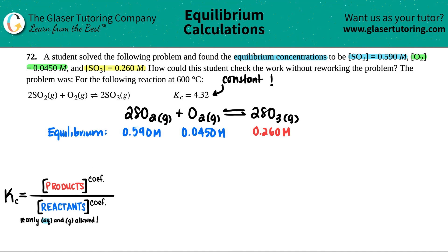It's Kc equals the concentration of the products divided by the concentration of reactants raised to the coefficients. And remember, only aqueous and gases are allowed in your Kc expression.